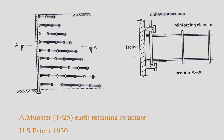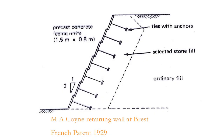Before this was done, the people working between the 1920s to 1930s were working on this. In 1929, there is a French patent called the coin wall. Looking at this figure taken from the patent: from our soil mechanics viewpoint, this is a selected stone fill. Today we talk of a granular fill between the reinforcements - they had already specified selected stone fill. This fill gives the earth pressure anyway, while the other is ordinary fill.